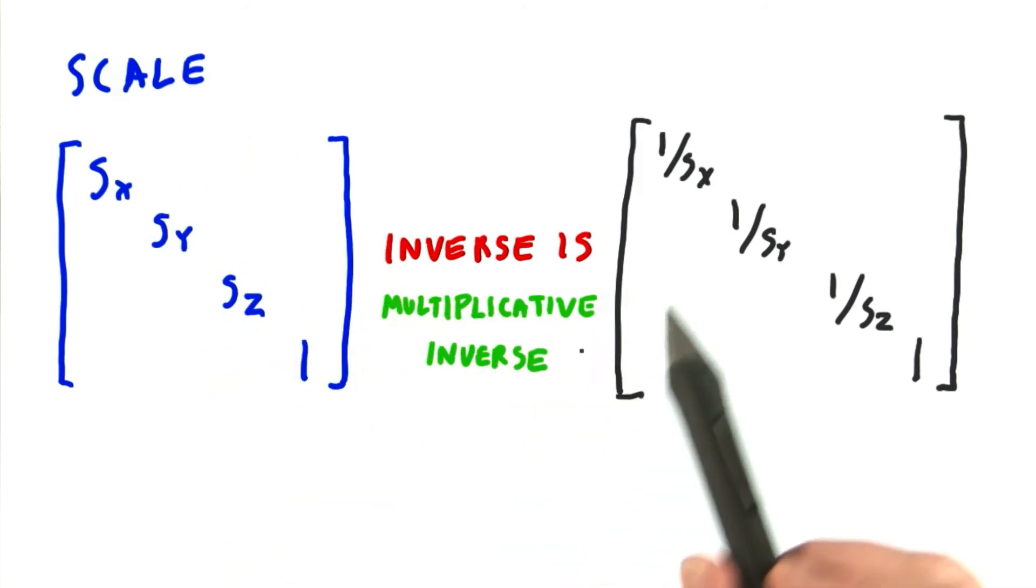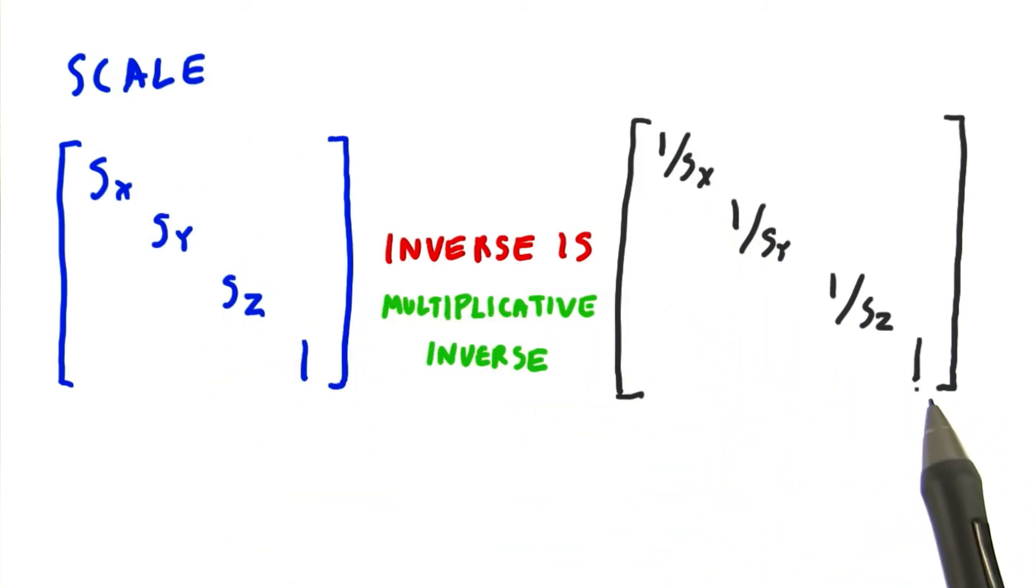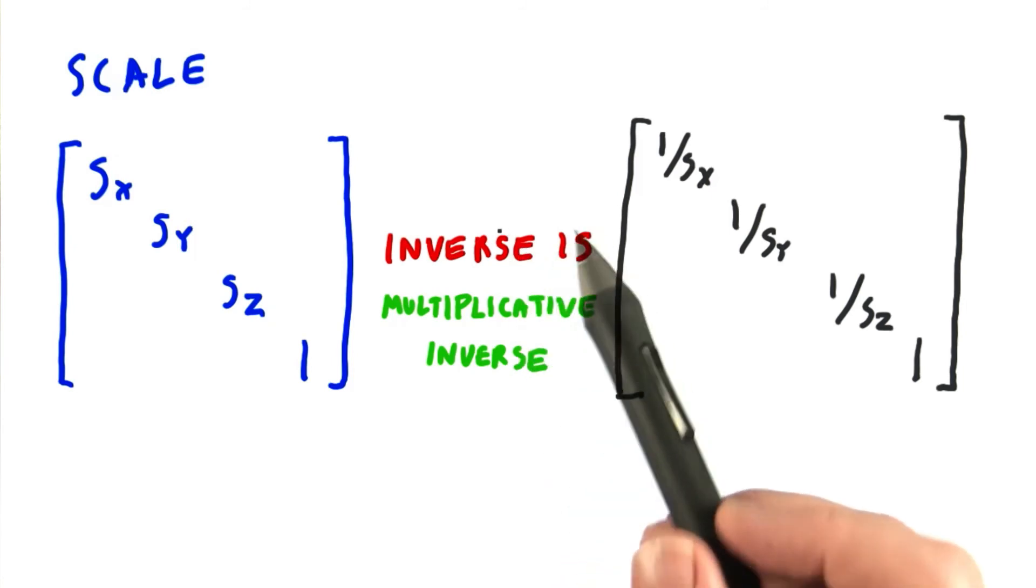For a scale matrix, we divide one by the original scale factors. Or to say it more mathematically, we take the multiplicative inverse of each scale factor. Things get more complex when we combine rotation, translation, and scale matrices. The inverse of a matrix representing a complex series of transforms is usually not obvious.